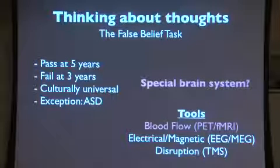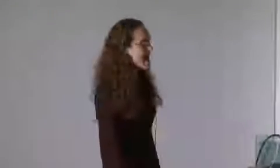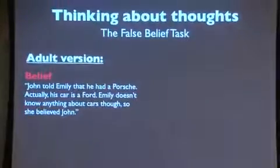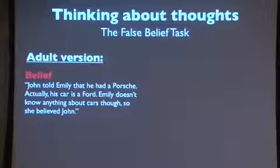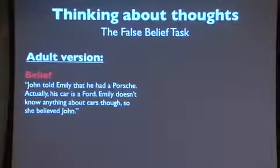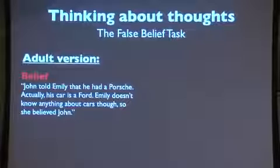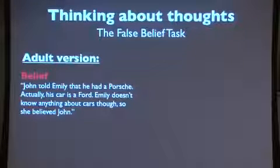We set out — I did this with Nancy about ten years ago — to find the hypothesized special brain system for solving false belief tasks. Adults read short stories. Some were belief stories: 'John told Emily he has a Porsche; actually he has a Ford. Emily doesn't know about cars, so she believes John.' We could then ask what car John really has, or what car Emily thinks he has. Other stories were about photographs — things that could be true or false, but not about beliefs.